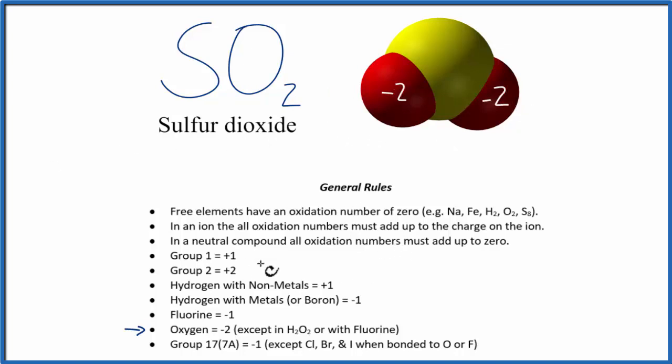As we look at our general rules, we see there's nothing for sulfur, and that's because sulfur can have different oxidation numbers. So to figure out the oxidation number on the sulfur, we'll use this information here, these oxidation numbers for oxygen, and the fact that if we have a neutral compound, it doesn't have a charge on it, all the oxidation numbers have to add up to zero.